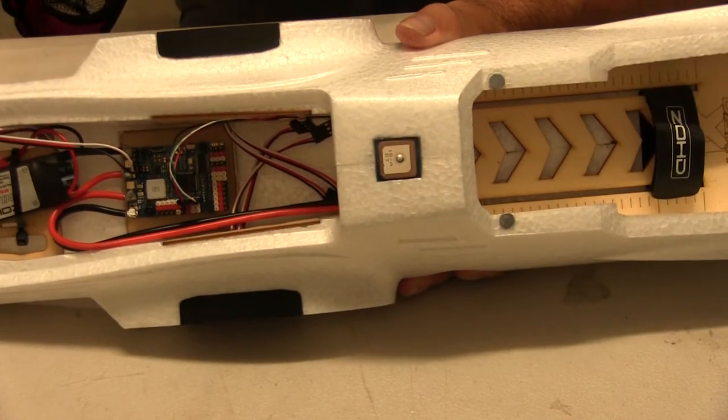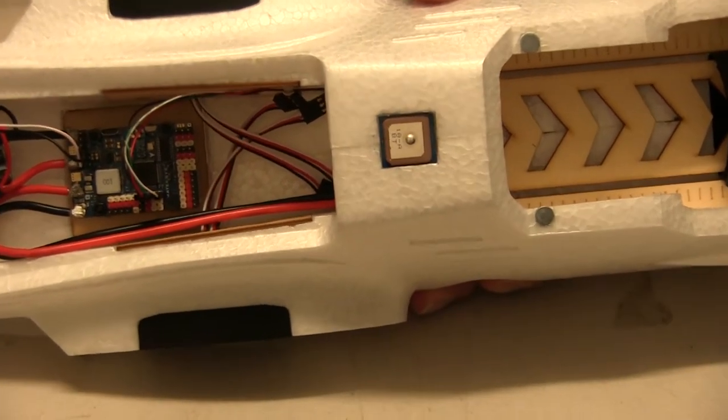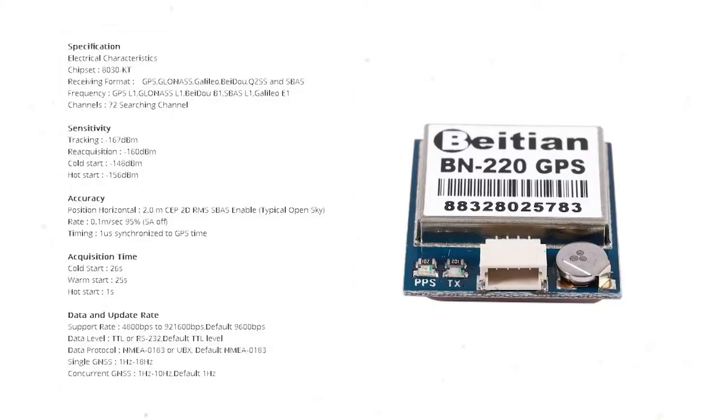I've already installed a GPS unit to it. That's the Beitian Dual BN220 GPS. It has GLONASS with it as well. I use the same GPS on my Z84. It's very good. It picks up anywhere up to nearly 30 satellites.